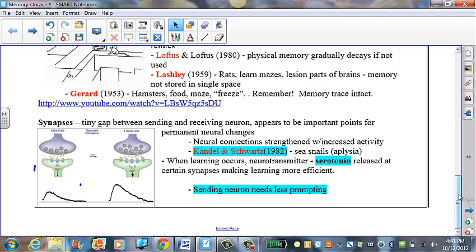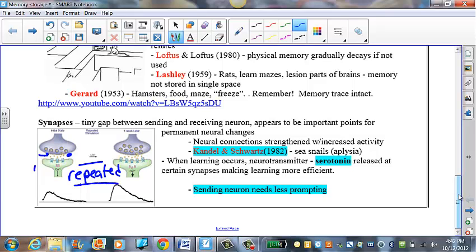What researchers have shown is that the neural connection between this sending neuron and the receiving neuron right in this area here is strengthened with repeated use. So repeated use of a neural pathway or a more rapid use.